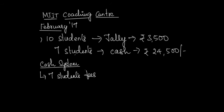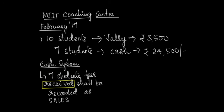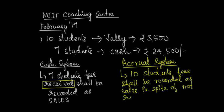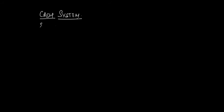If the coaching center follows cash system, only the fees received from 7 students, that is Rs. 24,500, shall be recorded as sales for the month of February. Whereas if MIIT coaching center follows accrual system, then not only the fees received by the 7 students but also the fees which shall be receivable from the rest of the 3 students shall also be recorded as sales for the month of February.